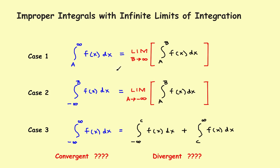This is going to be part two of the series on improper integrals. In the first video, we showed where the three cases came from, and also discussed what it meant for an integral to be convergent or divergent. In the first video, we looked at an integral that went from a off to positive infinity — a case one problem. In this video, we'll also look at another case one problem, except this one is going to require u-substitution. It's going to go from some fixed number A off to the right toward positive infinity.